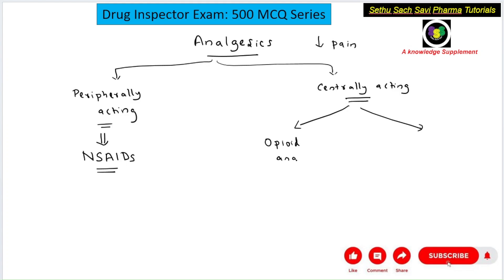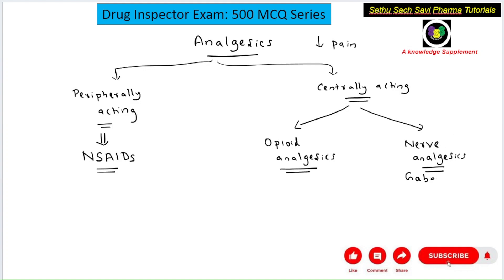The first category of centrally acting analgesics is opioid analgesics — morphine-like drugs, also called narcotic analgesics. The second category is neuropathic or nerve analgesics, also centrally acting. Nerve analgesics include GABA-related drugs like gabapentin.